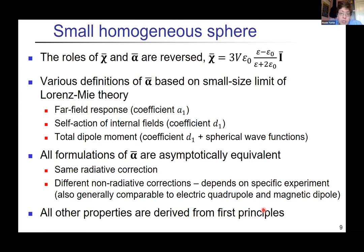Let's discuss briefly what happens with a microscopic model. The simplest is a homogeneous sphere. The important thing here is that the roles of χ and α are reversed—everybody knows the electrostatic solution for a sphere which gives electrostatic polarizability using only the dielectric function. The problem is that we have the Lorenz-Mie solution which solves everything, but given this solution it's not trivial to unambiguously define the polarizability. There are several options mentioned here, and all those formulations are actually logically equivalent with the same radiative correction, but the non-radiative corrections are different.